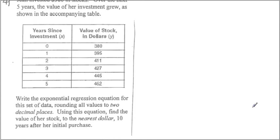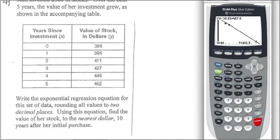Number four. So we have some sort of an investment going from zero to five years. Now they want us to write the exponential regression equation using two decimal places. So what we're gonna be doing is go for the edit.